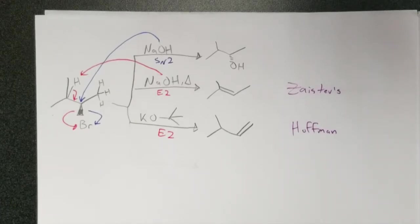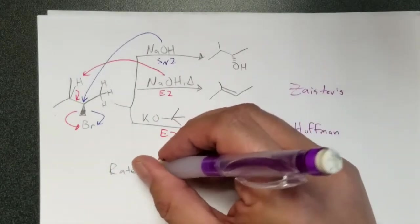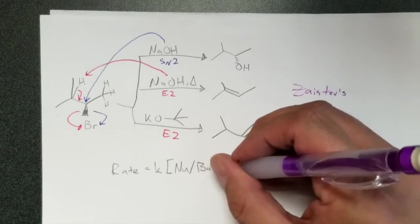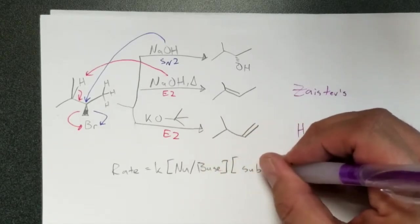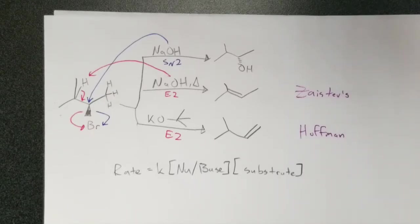Do you guys remember what the rate law is? So does it involve one species or two species? It involves two. That's where the twos come from. So a common misconception students have is that they think that the numbers on here indicate the number of steps. They actually indicate the number of compounds in the rate law. So here, for the rate law, the rate is going to be K times the nucleophile or base times the substrate. So if I double the concentration of hydroxide, it should double the rate. If I double the concentration of both the substrate and the nucleophile, it should quadruple the rate.